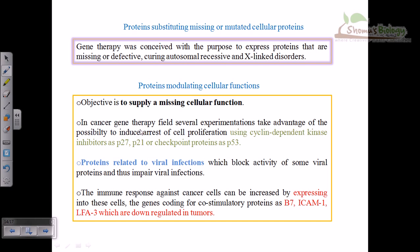If we provide genes that supplement the cell with cyclin-dependent kinase inhibitors like p27, p21, and p53, it can eventually block the exponential growth of cancer cells.